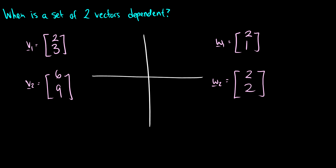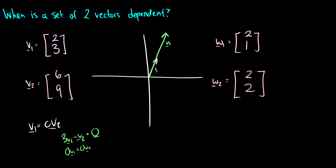When is a set of two vectors dependent? A set of two vectors is dependent when one vector is a scalar multiple of the other. For instance, v1 = (2, 3) and v2 = (6, 9): v2 is just 3*v1, so we can write 3*v1 - v2 = 0. That's a non-trivial solution, so they are dependent.